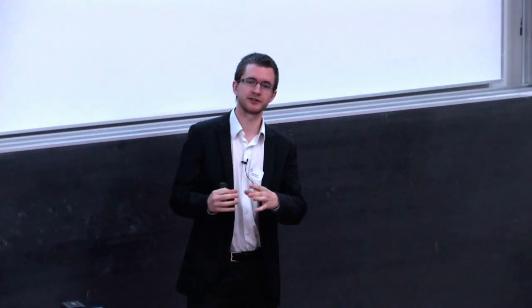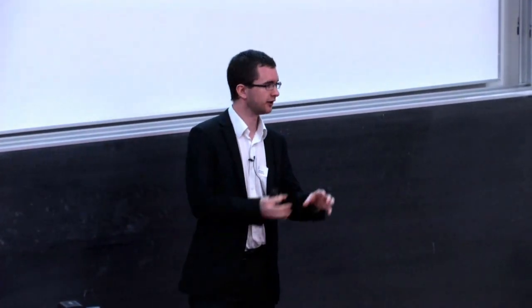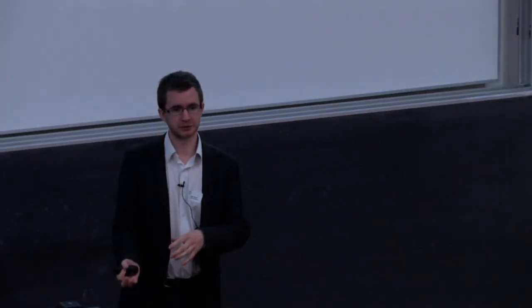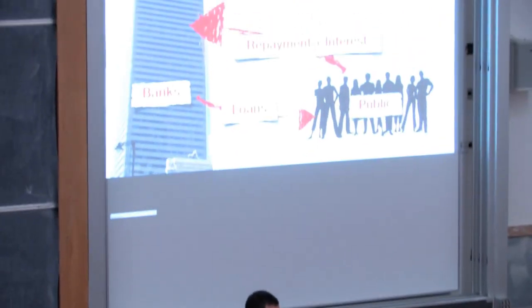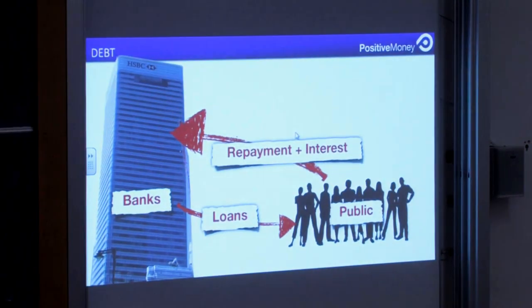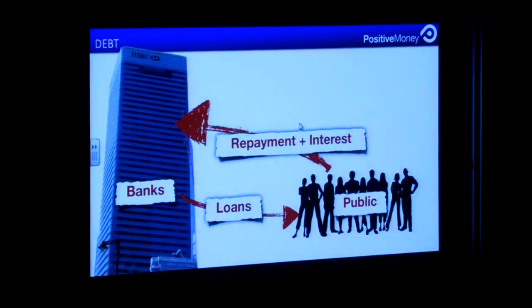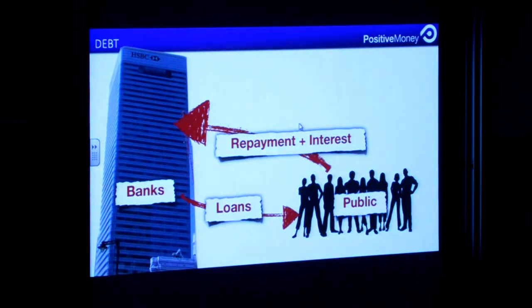So, basically, we as the public have to borrow the entire money supply from the banking sector. And, of course, we have to be repaying all those loans because all that money was borrowed and paying the interest on top. So, we're effectively paying interest on the entire money supply. If there is 100 pounds in your bank account right now, then somebody else has 100 pounds of debt, which they're paying interest on.